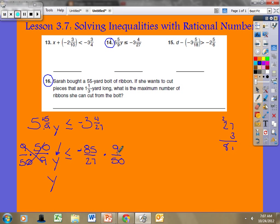On the right side, I'm multiplying -85/27 by 9/50. Looking for common factors diagonally: 9 goes into 9 once and into 27 three times. 50 and 85 both end in 5 and 0, so 5 goes into 50 ten times and into 85 seventeen times. So I have -17/30. Therefore, y ≤ -17/30.